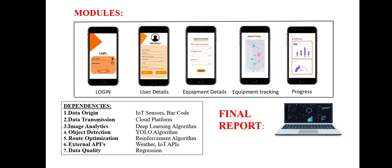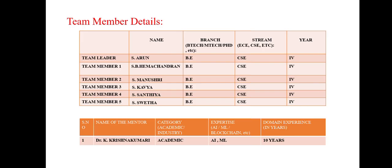External APIs like weather and IoT APIs are used, though instead of these we use telematics software. For ensuring data quality, we use a regression concept. Finally, we generate a project report for the overall project. Thank you.